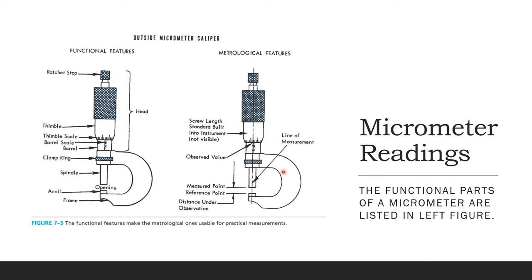On the metrological features side, you can see the axis — your line of measurement — the reference point at one end, the measured point, and the distance under observation. The observed value and the screw limit are standards built into the instrument. The functional features make the metrological ones usable for practical measurement; you place your parts here to be measured.